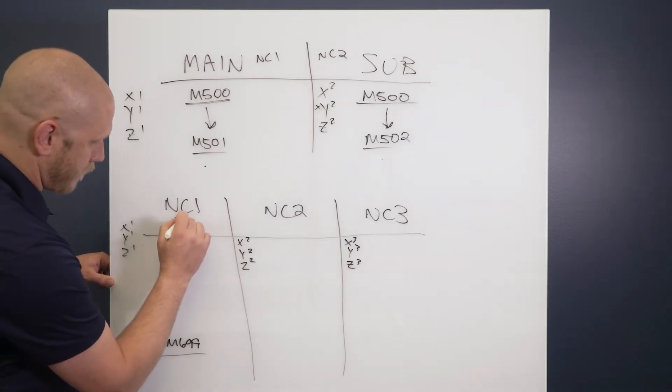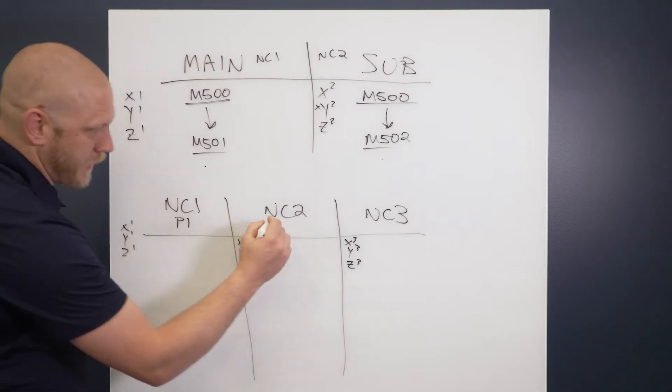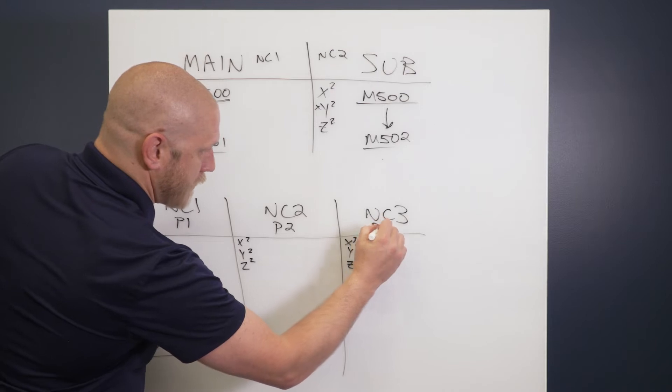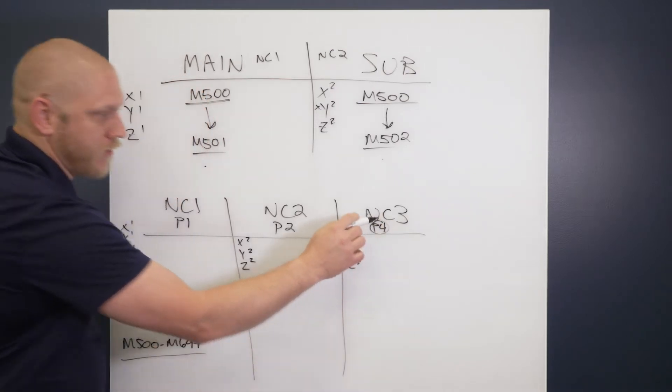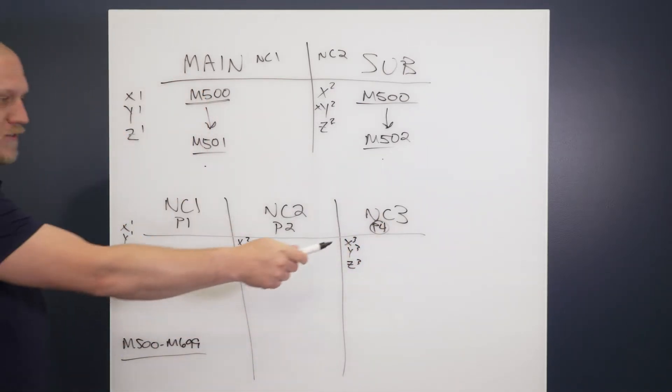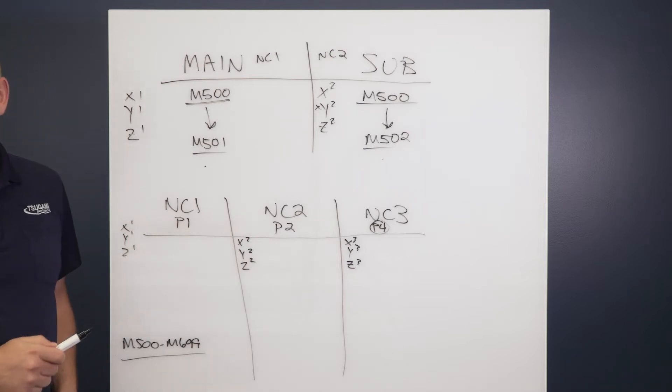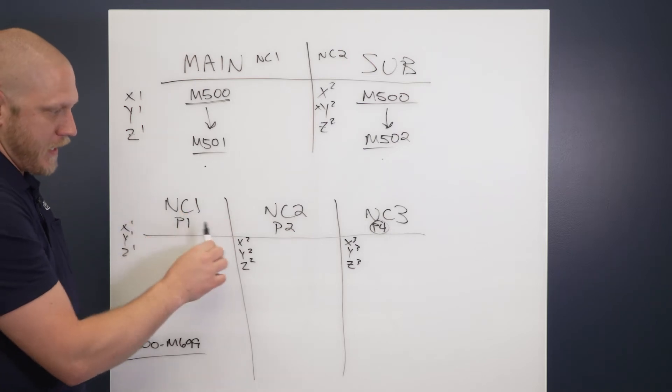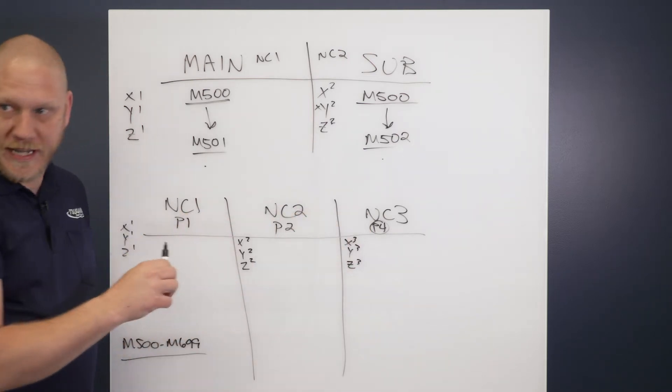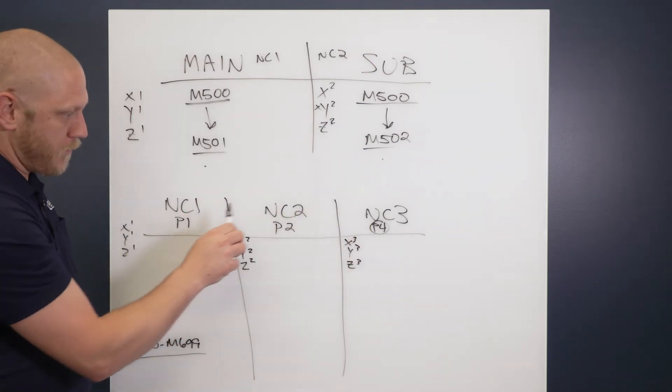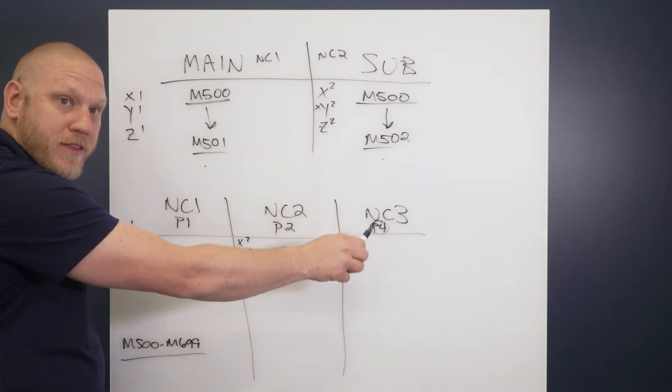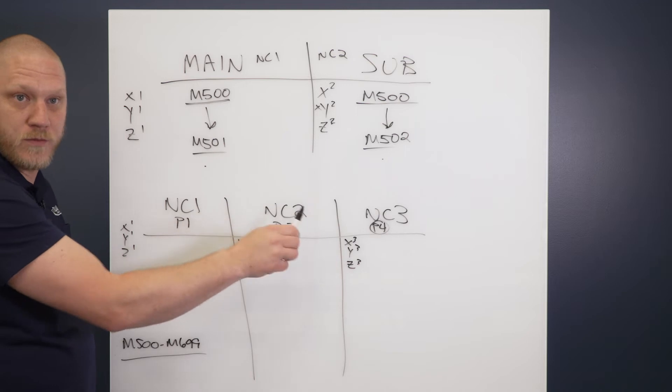Path one is P1, NC2 is P2, NC3 is P4. Now, first question everybody asks is, of course, why is that a four and not a three? The way these P codes work and how the weight codes communicate is by adding the P numbers together. So one plus two equals three. So you can't have path three equal three. It has to equal something different.